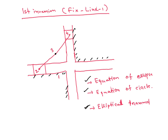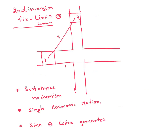For the second inversion, we have to fix link 2 or link 4 — either one of the sliders. We will get the Scotch Yoke mechanism, and simple harmonic motion. This is also called a sine or cosine generator. These things are very important — they are asked in all exams, even GATE. So for the second inversion, fix any of slider 2 or 4.